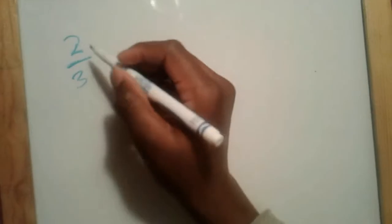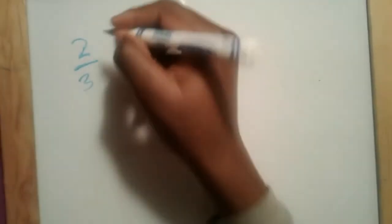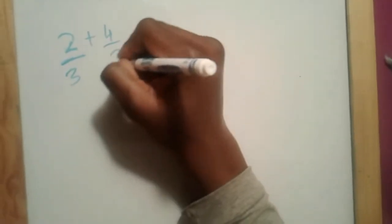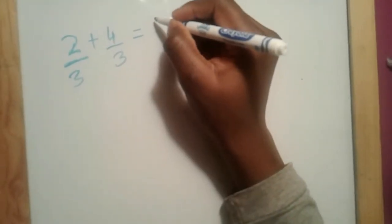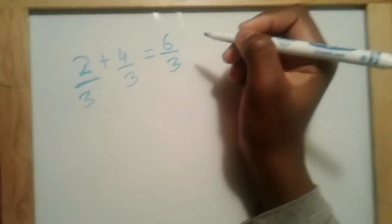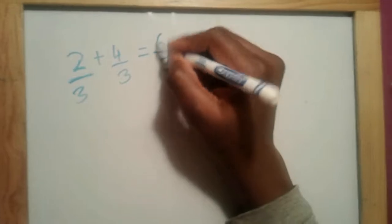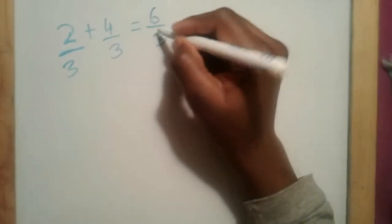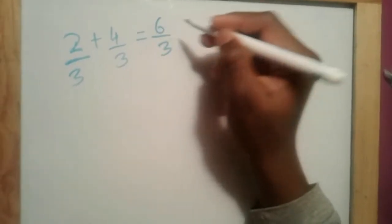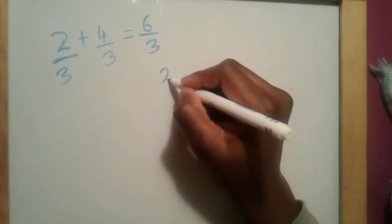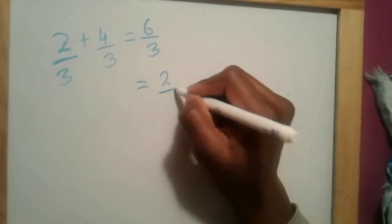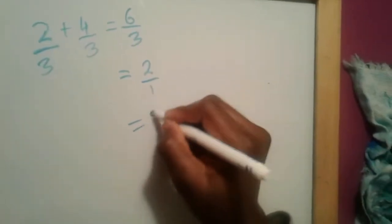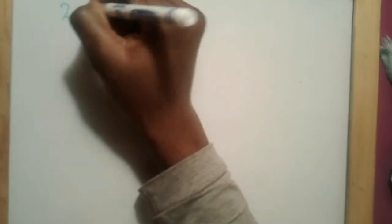So, numerators and denominators. For example, if you have something like six out of three — this is an improper fraction, so you must reduce it to its lowest fraction. If you divide six by three it will be two, so the answer will be two out of one, which is just two.